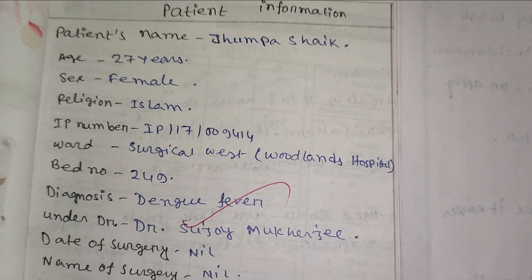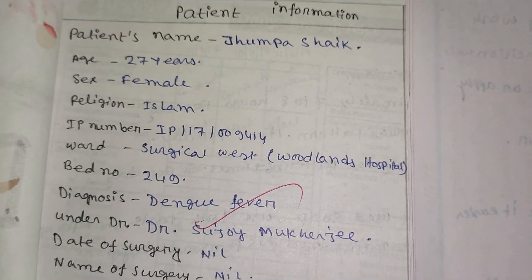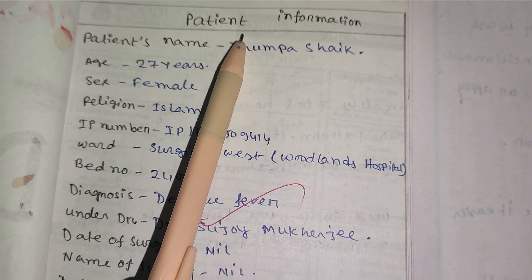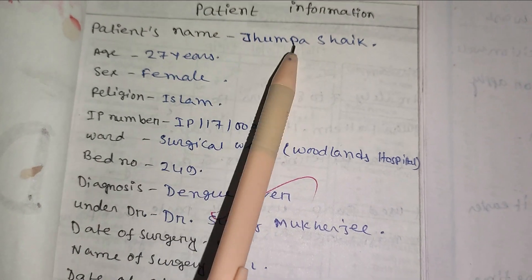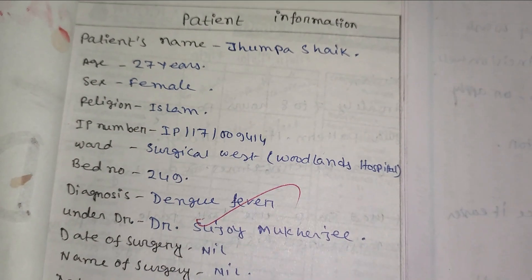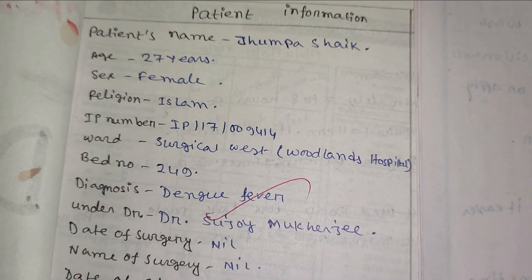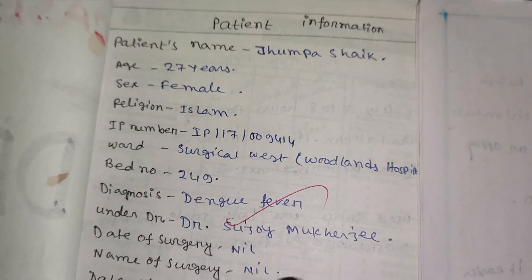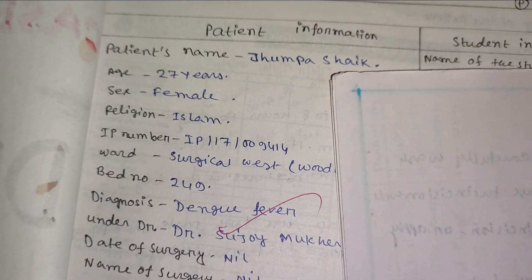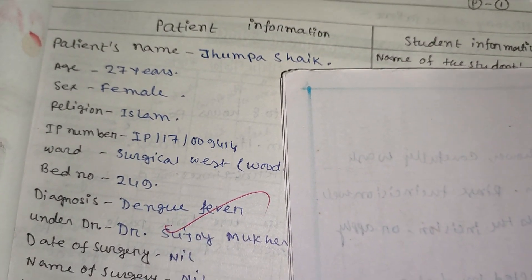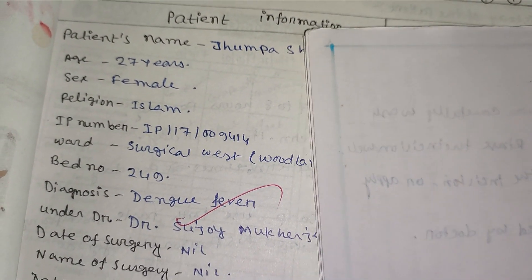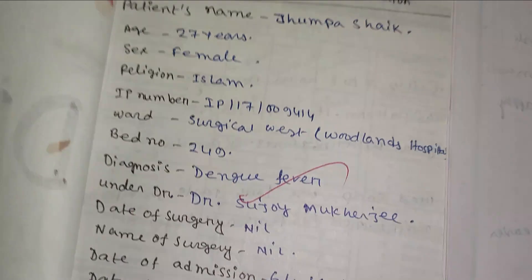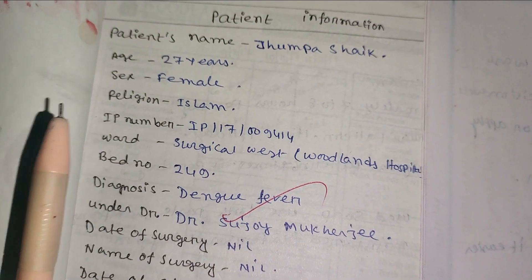First, in any case presentation, we manage patient history. The format has two columns: one column is for patient information and one column is for student information.